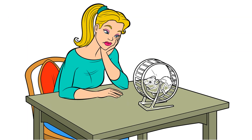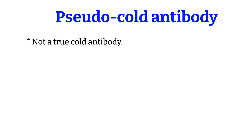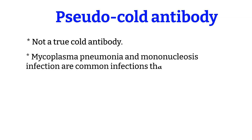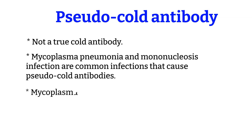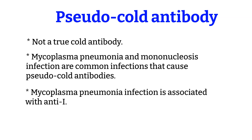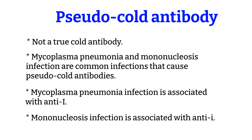There is also a pseudo cold antibody — when you have an antibody that acts like a cold antibody but is not actually an antibody. A pseudo cold antibody can be influenced by a patient's health conditions. The two common infections that cause this are mycoplasma pneumonia and mononucleosis. Mycoplasma pneumonia is associated with anti-big-I, while mononucleosis is associated with anti-little-I. These are common cold antibodies but clinically insignificant, and they will go away when the infection subsides.